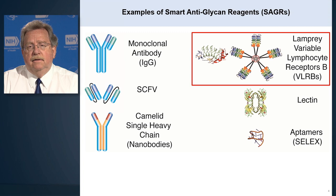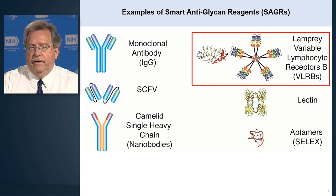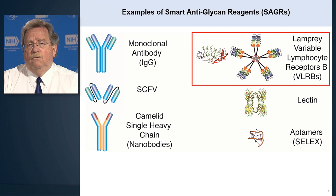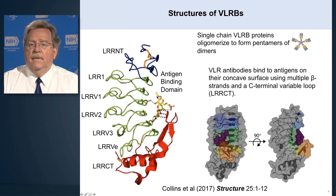We've been working on SAGRs, which are antibodies made in the fish called Lamprey. They are called Lamprey Variable Lymphocyte Receptors B — VLRBs — like a B-cell. The Lamprey also has B-cells, T-cells, and different blood cells. Antibodies in contrast to lectins are induced by the introduction of an antigen, so the animal makes an antibody in response to the antigen you gave it.